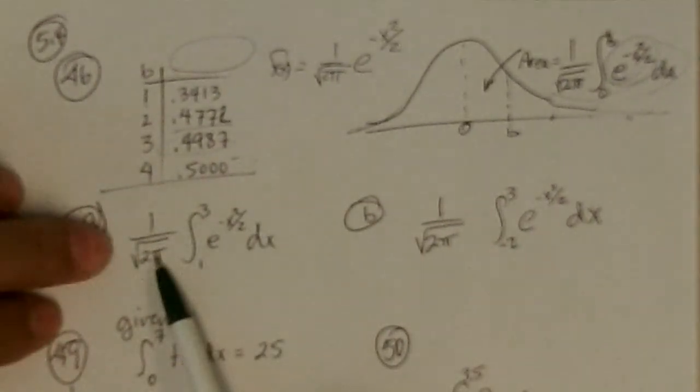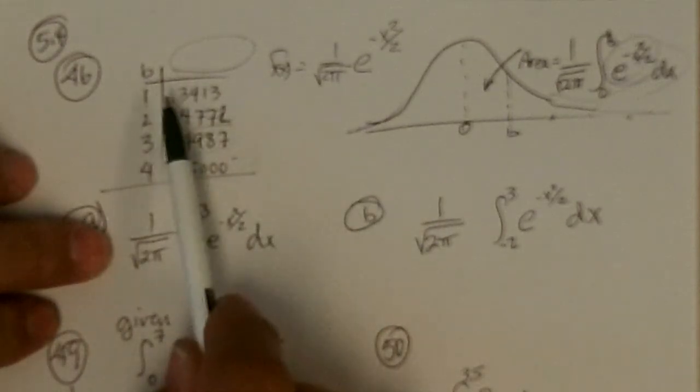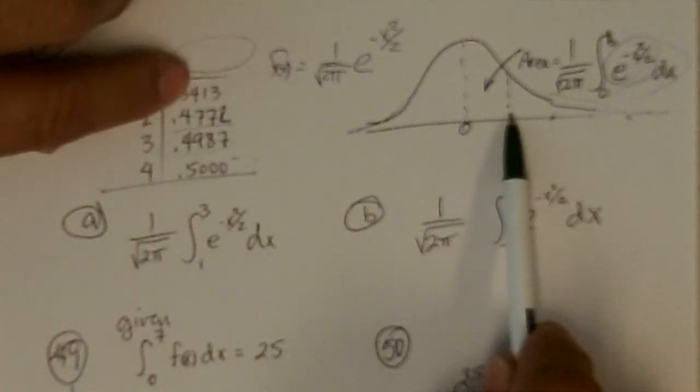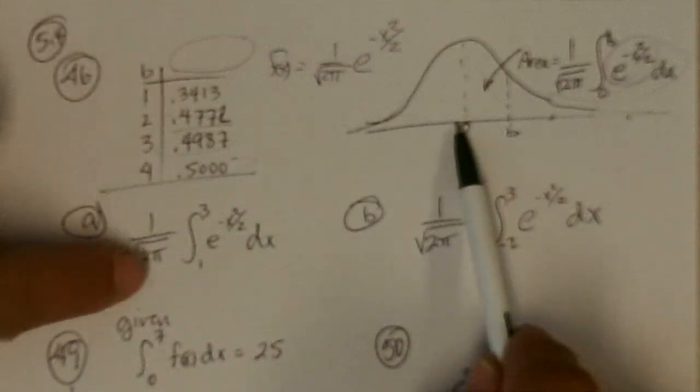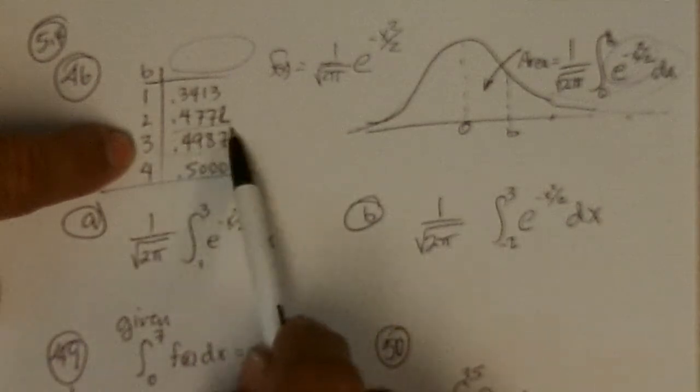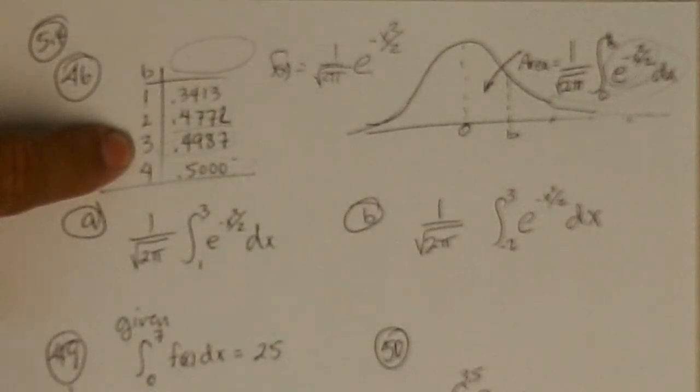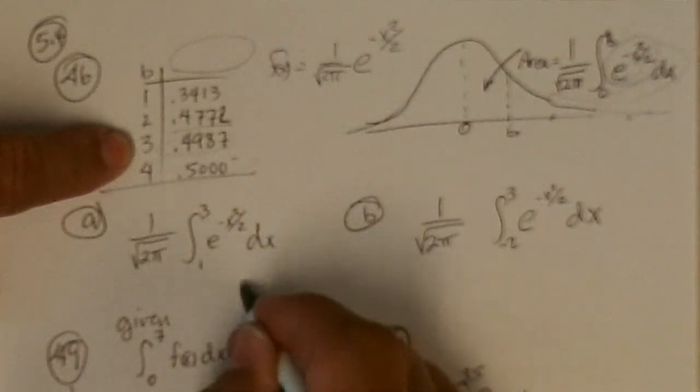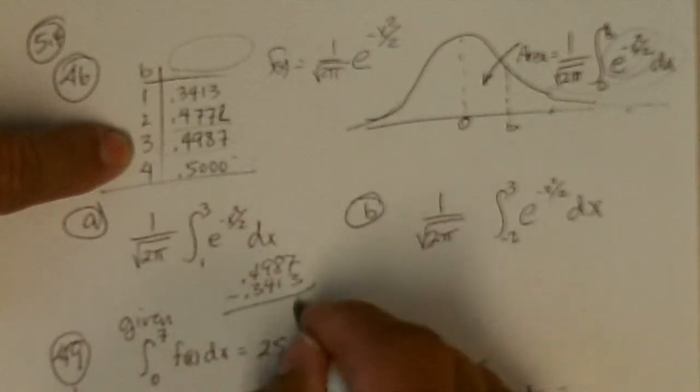Okay. So now it says, what's the area under the curve from 1 to 3? Well, if 0 to 1 is this much, .3413, and from 0 to 3 is this much, then 1 to 3 would be this minus that. And that's what you should do for that. So it's going to be 0.4987 minus 0.3413, which gives you .4751.